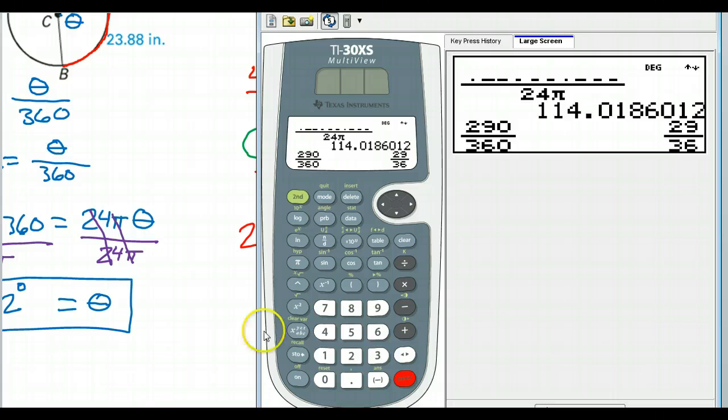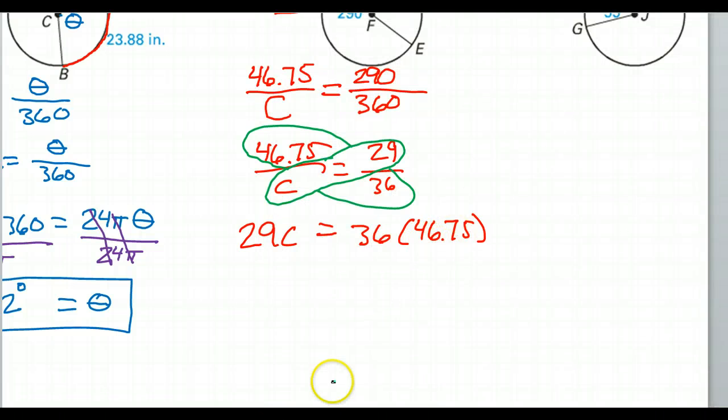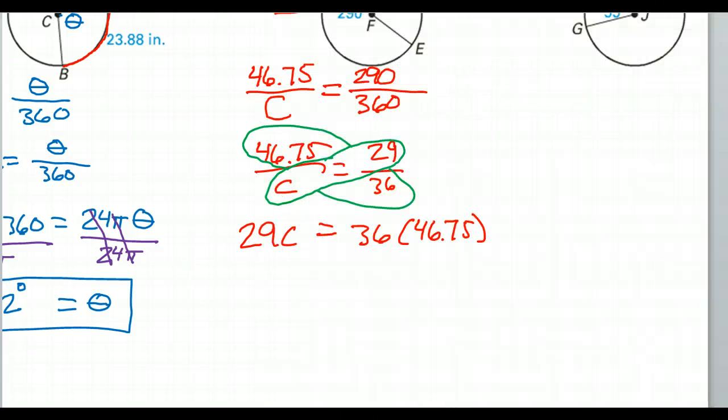So 36 times 46.75. Now let's see. I'm kind of curious. What would have happened if I had multiplied those together? 36 times 46.75. Well, that's not too bad. So 1,683. That's pretty good. I'm going to go with that.